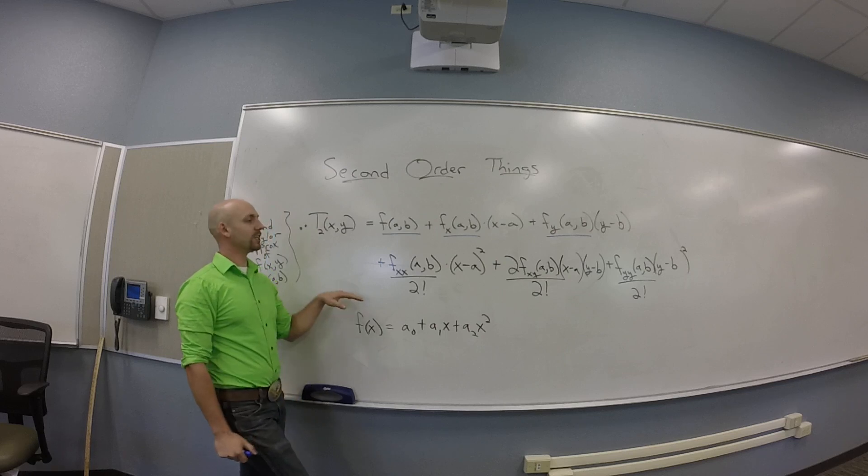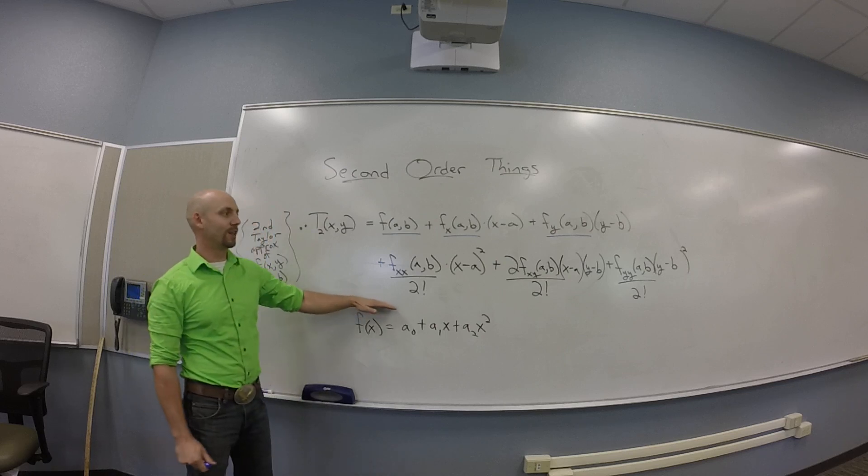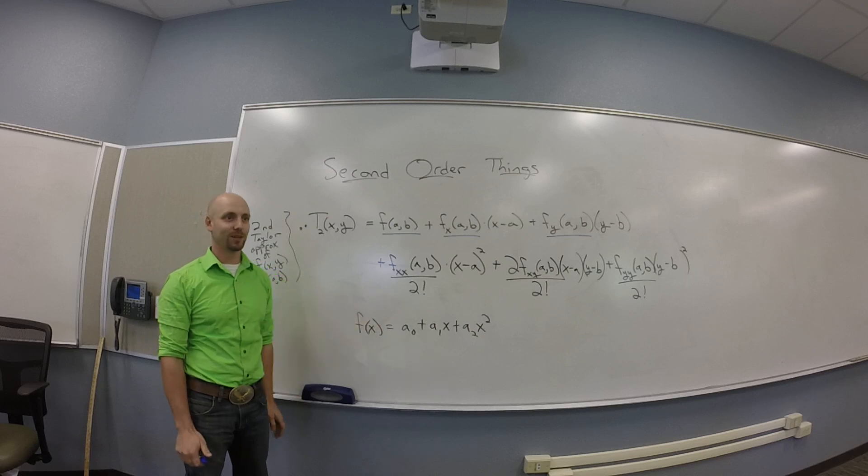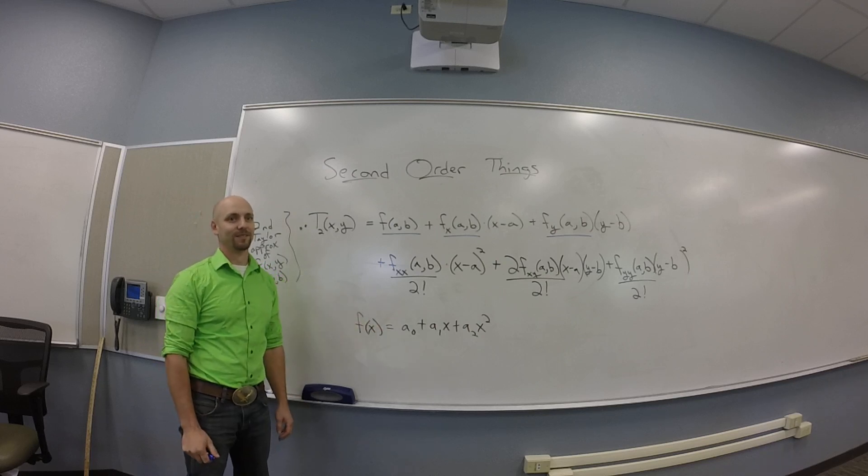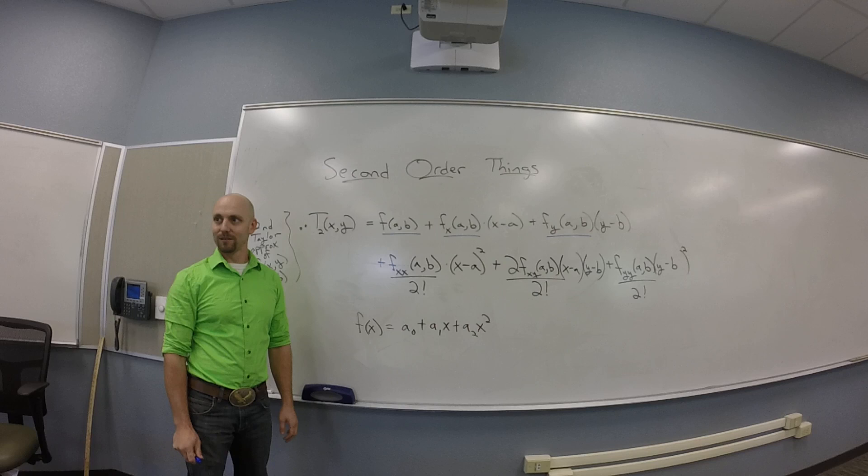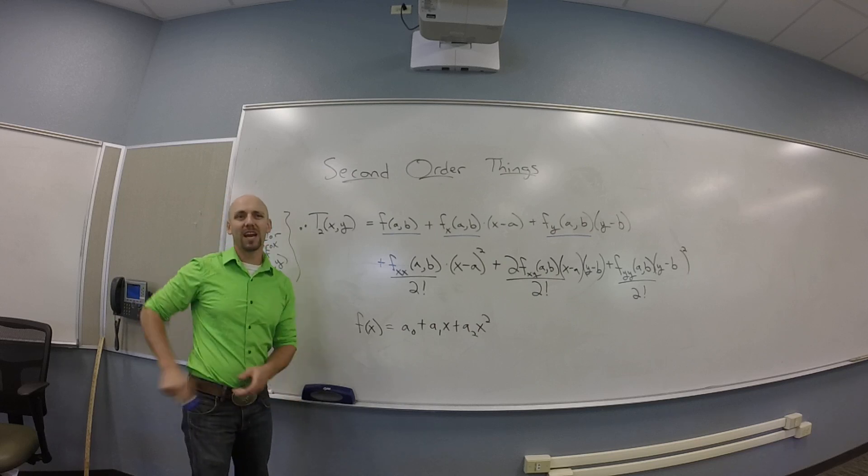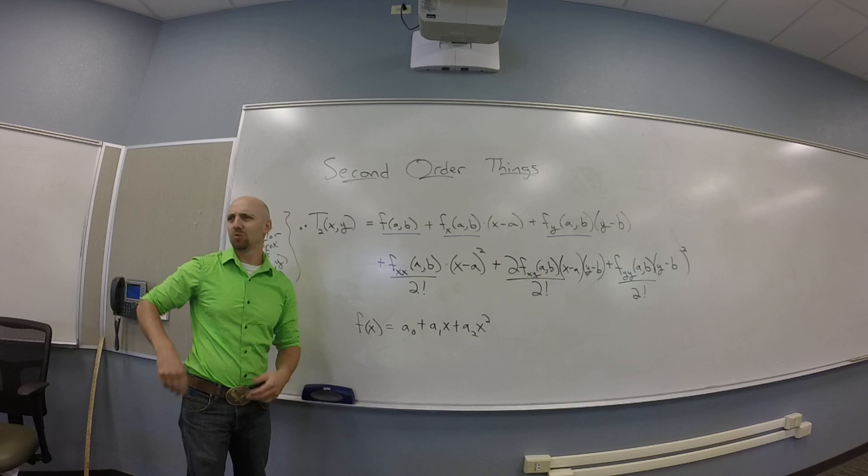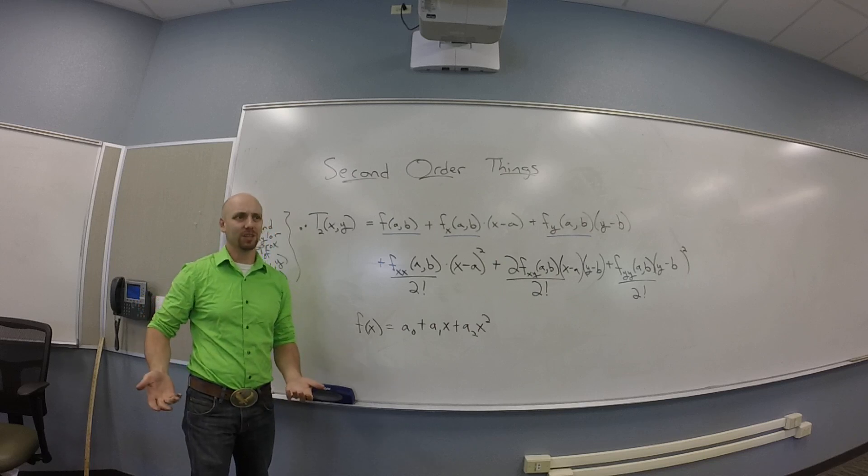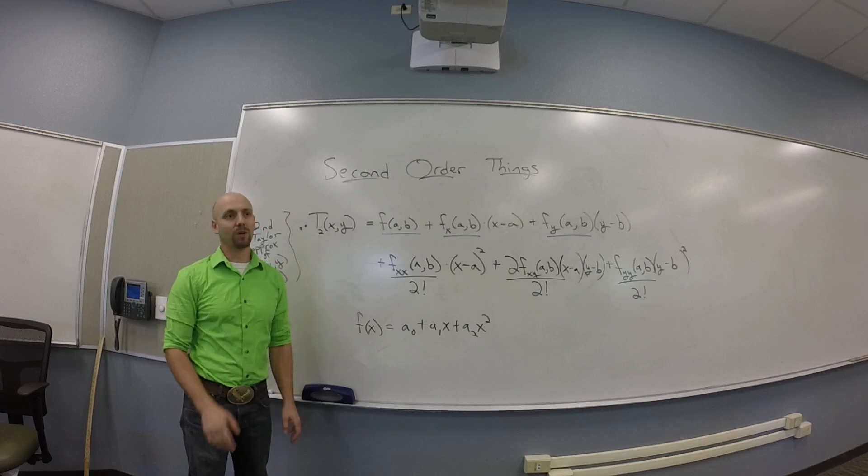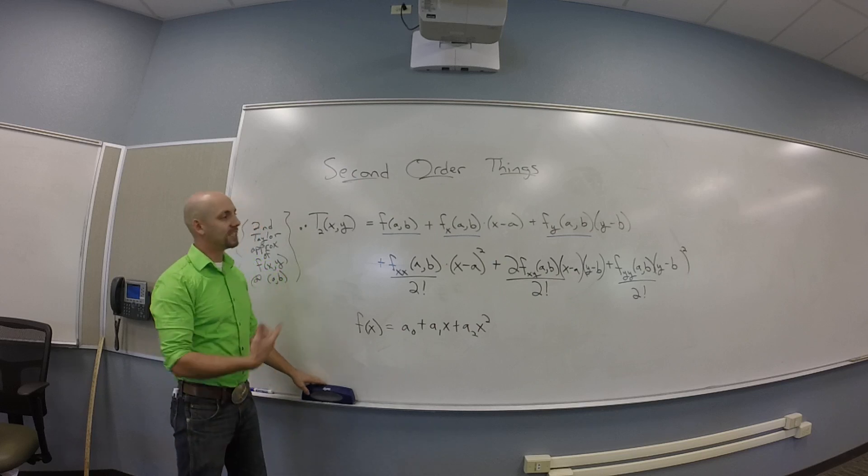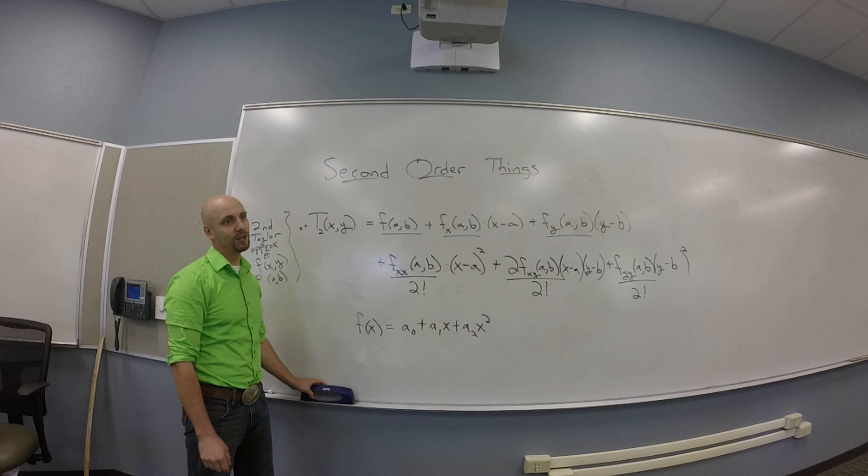You guys good on this? Okay, so at this point, you basically have my word that this is a second order Taylor approximation. We'll prove it otherwise later on. I'm not going to actually use this thing for very much. I just want you to know that this is an object that does exist. Does that make sense? We're not actually going to go into making these things.